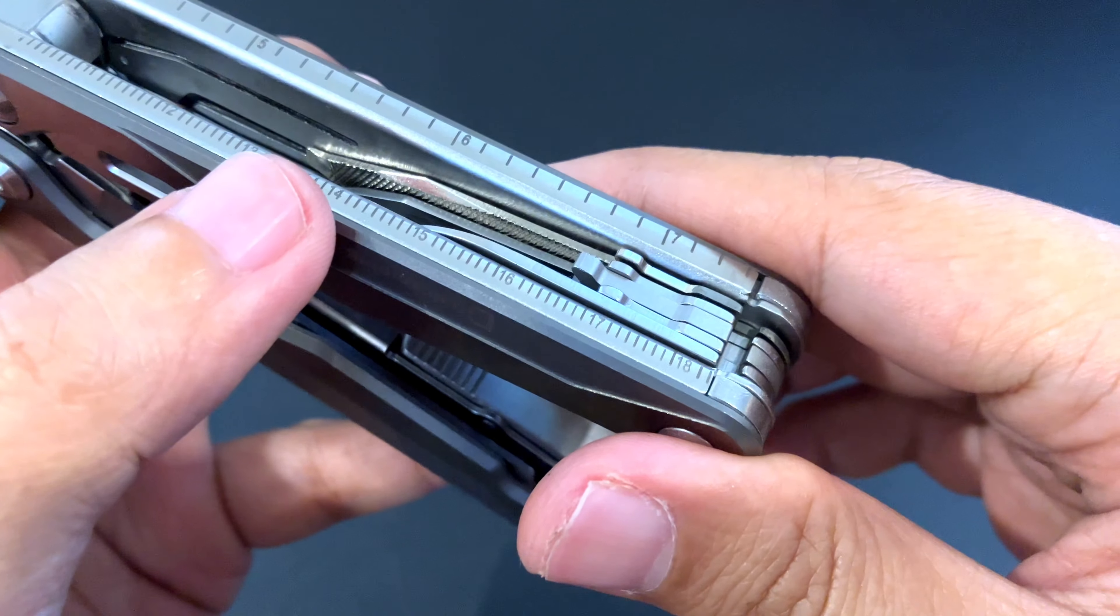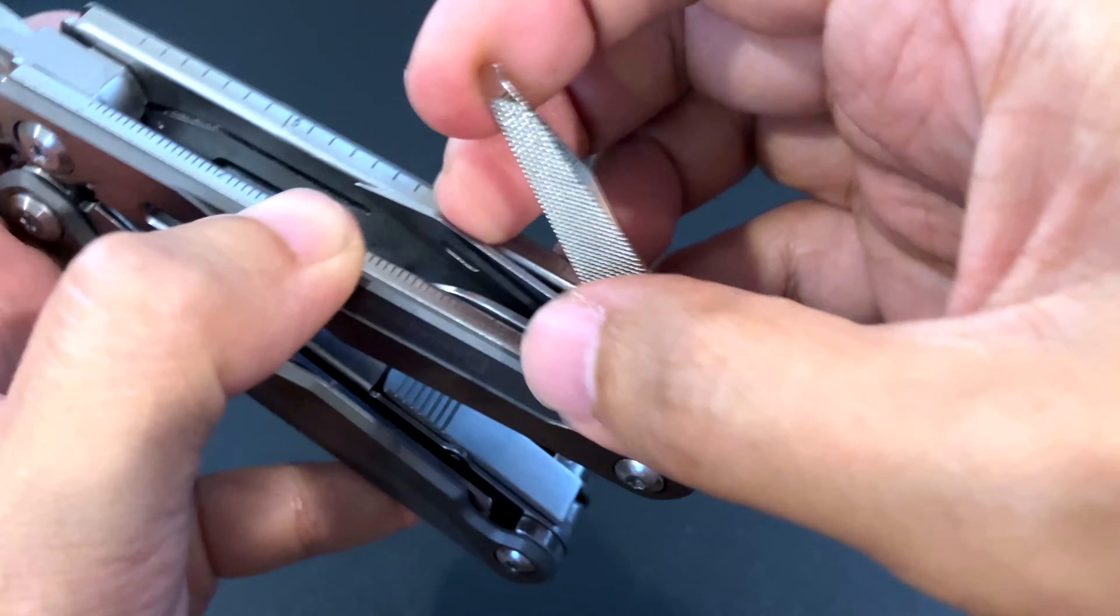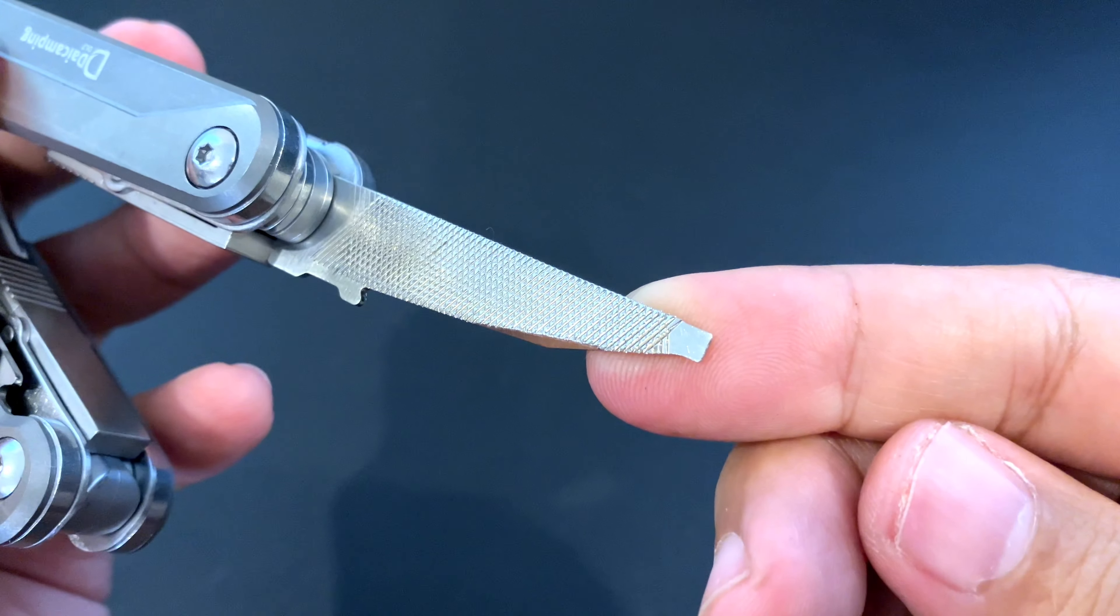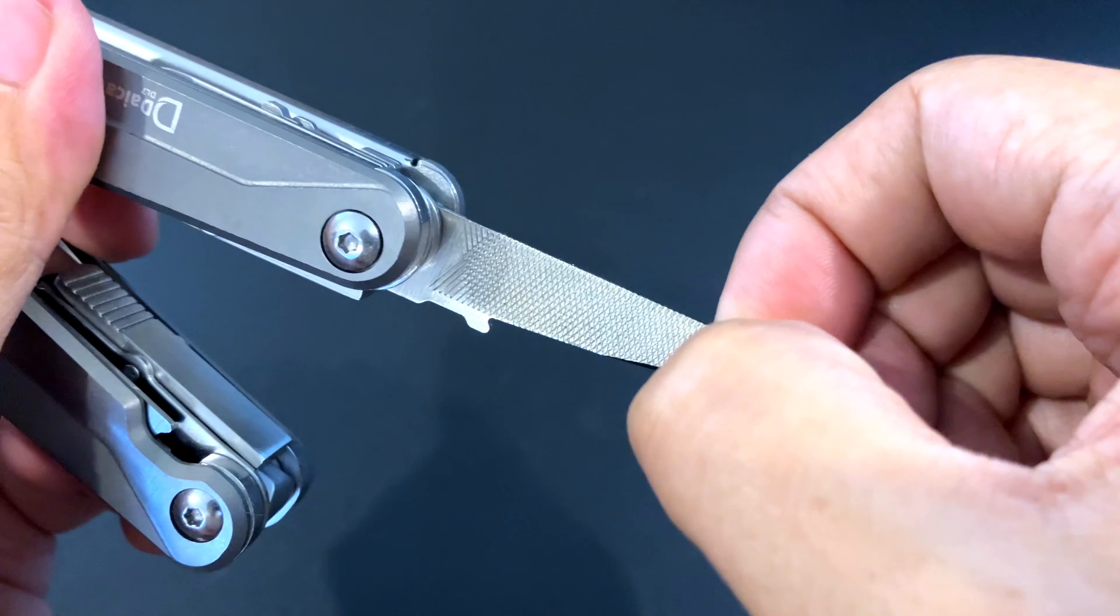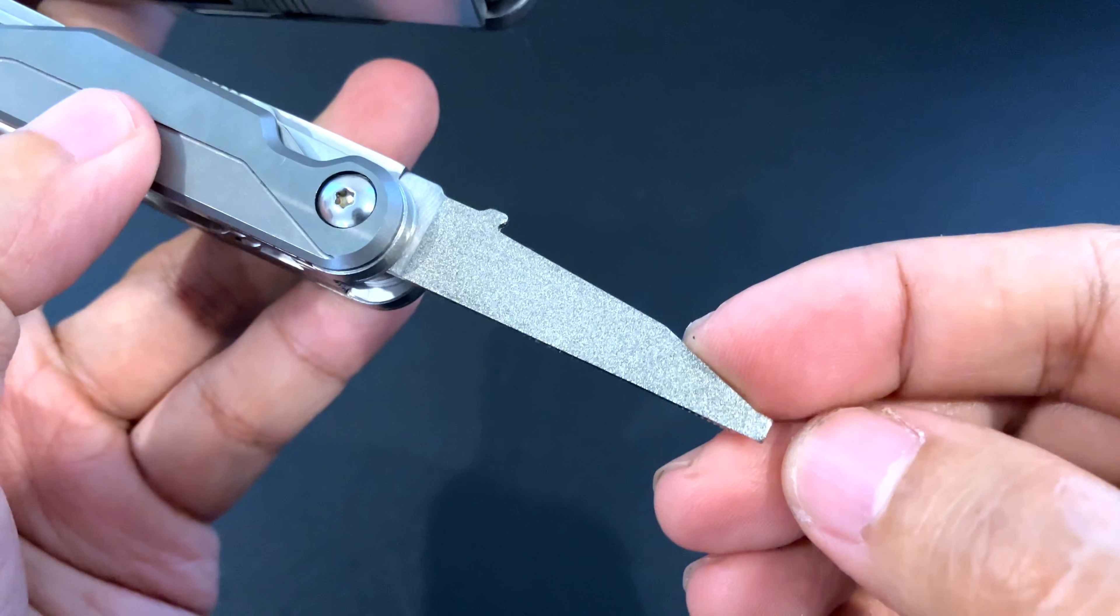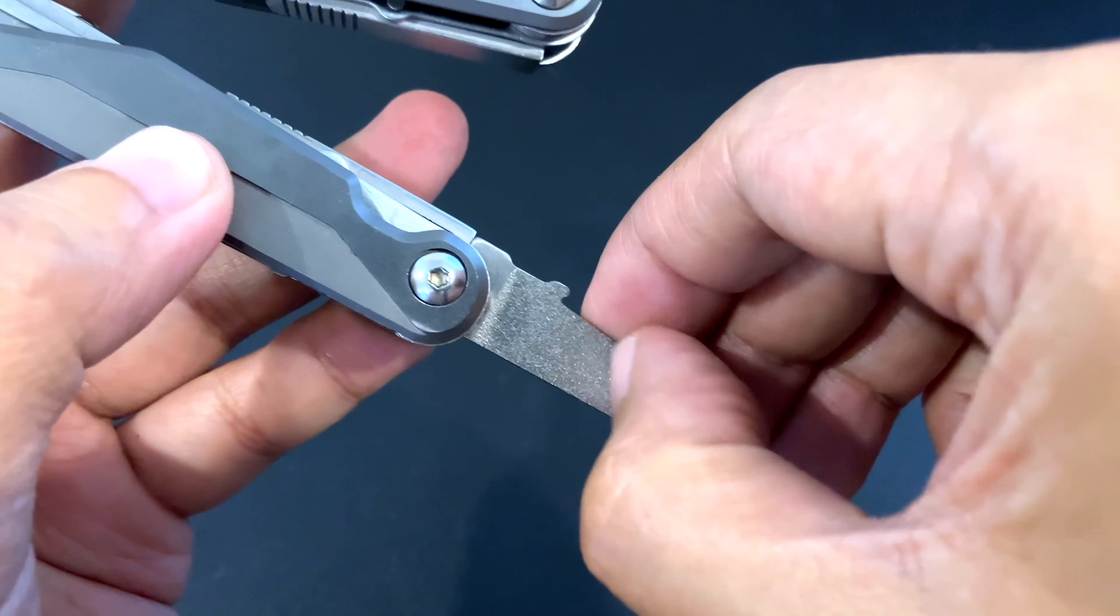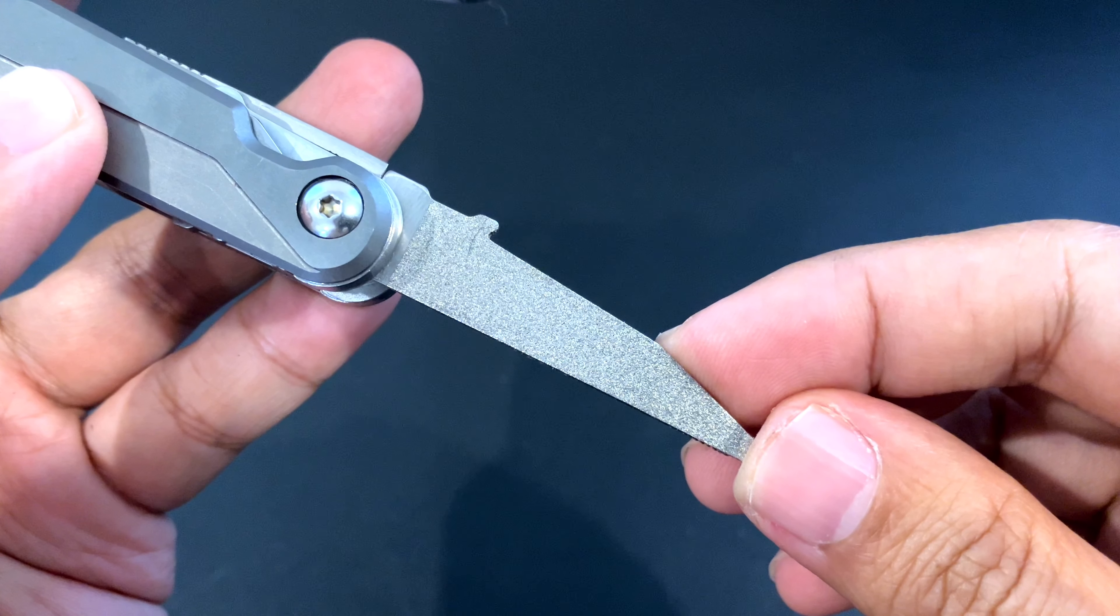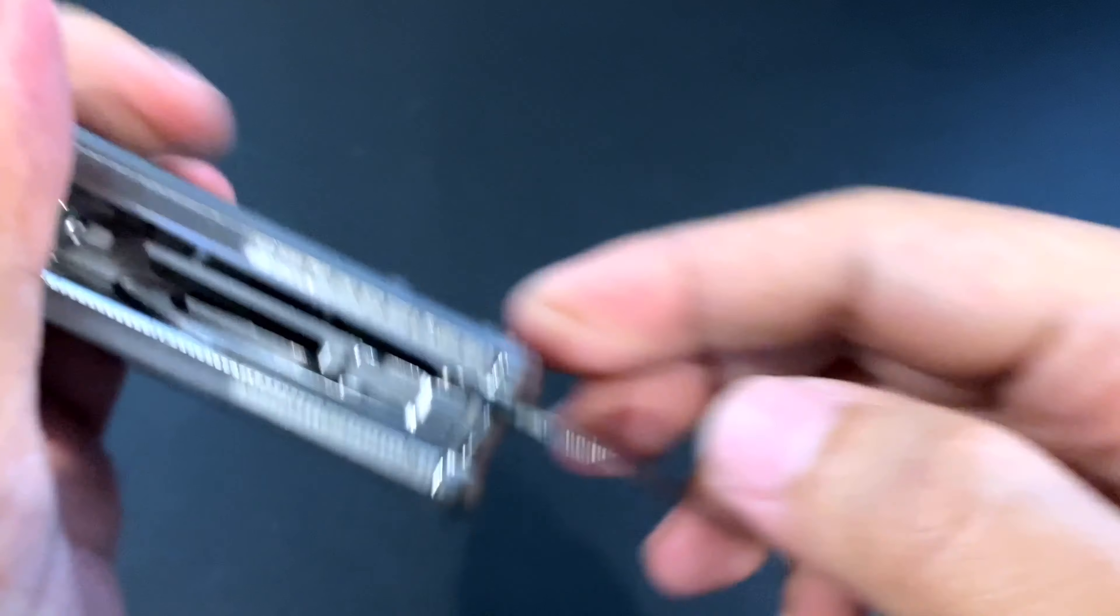On the other side, we have a file and a flat head. This one is a criss cut file but it doesn't seem to be very aggressive. But it has this diamond coated file and this one looks good and feels good. This is usually what's missing in the multi-tools where you have big scissors. So it's good that they somehow alleviate that problem with this one.